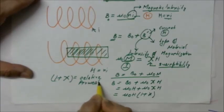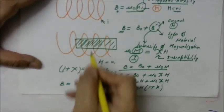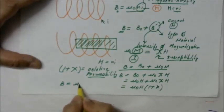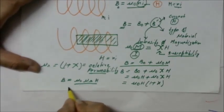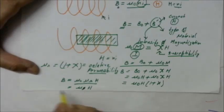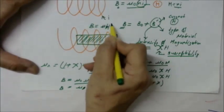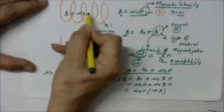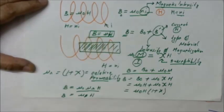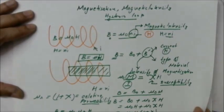Relative permeability of the material is denoted μᵣ. So the magnetic field inside the solenoid when the material is placed becomes B equals μ₀μᵣH. And μ₀μᵣ together become μ, the permeability of the material. So when there is a material, B equals μH, and when there is no material, B equals μ₀H, where H equals nI.